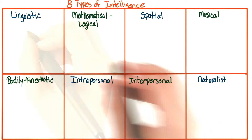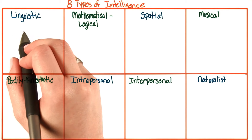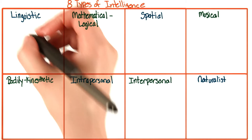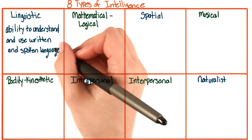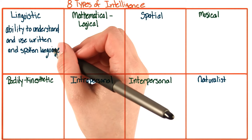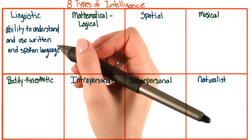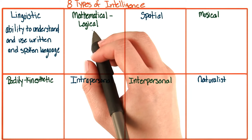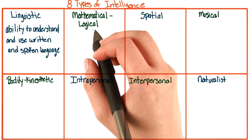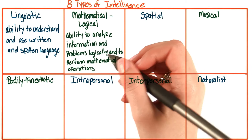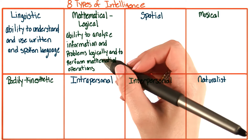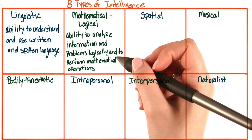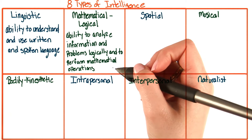Here are the eight types. First, we have linguistic intelligence. This is the language and verbal side of intelligence — our ability to understand and use both written and spoken language. Next, we have our mathematical-logical type of intelligence. This is the ability to analyze information and problems logically and to perform mathematical operations.